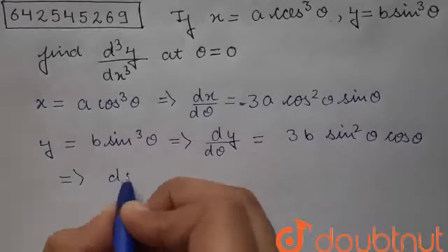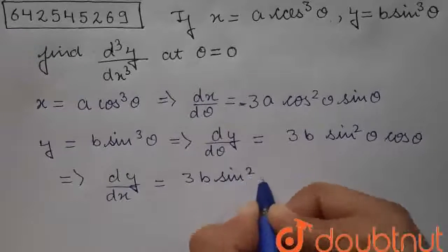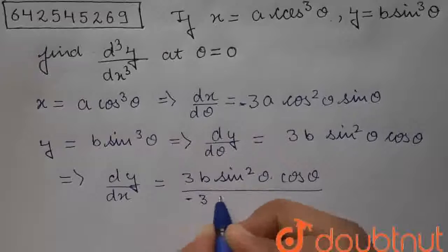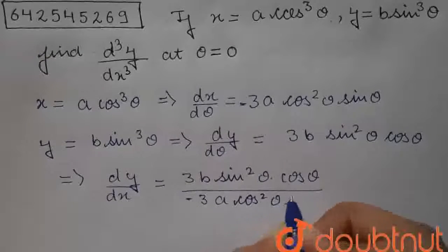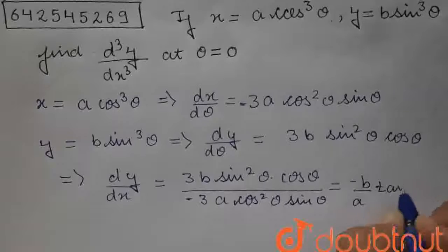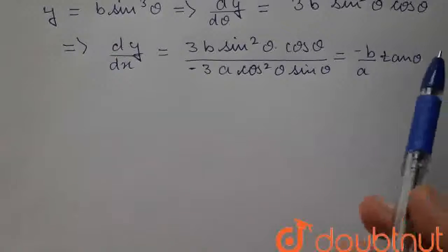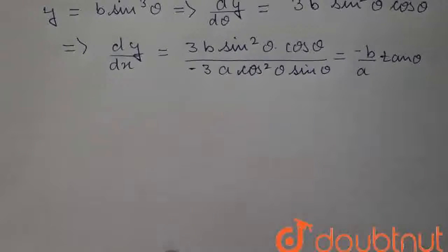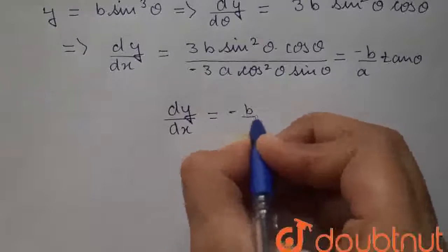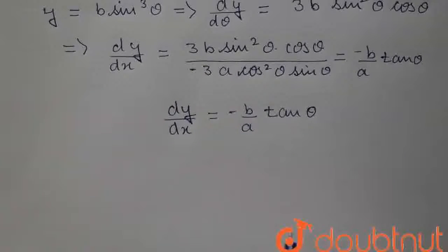From here we get the value for dy by dx, which will be equal to 3b sin square theta into cos theta divided by minus 3a cos square theta sin theta. So from here we get dy by dx equal to minus b upon a into tan theta. In the question we were asked to find its value at theta equal to 0, but if we apply theta as 0, the value of dy by dx is minus b upon a tan theta, which will not be defined.